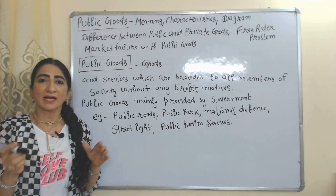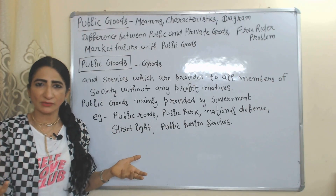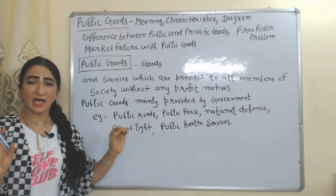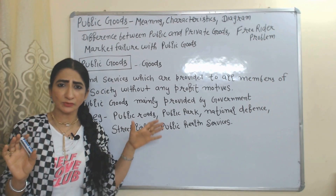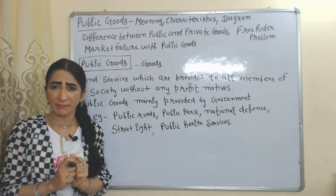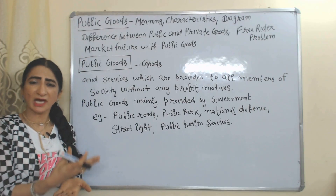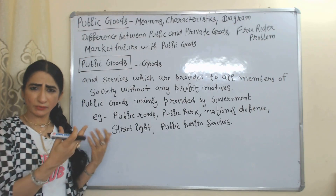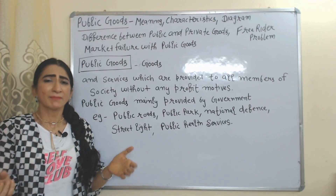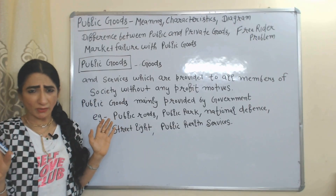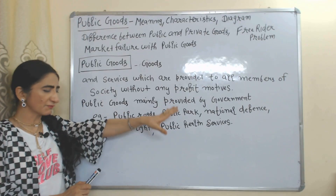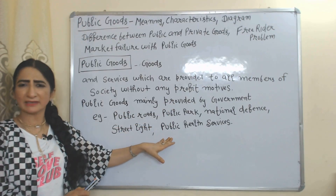So let's start. What do you mean by public goods? Goods which are provided to all members of society without any motive of profit are called public goods. Public goods are mainly provided by government — for example, public roads, public parks, national defense, street lights, and public health services.